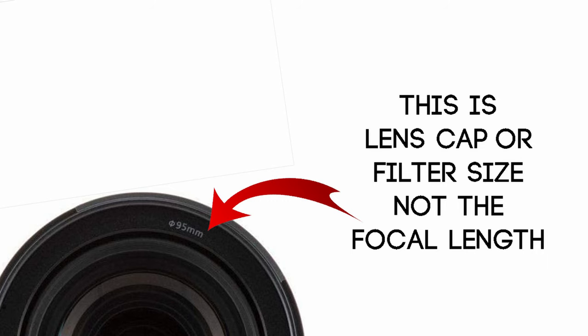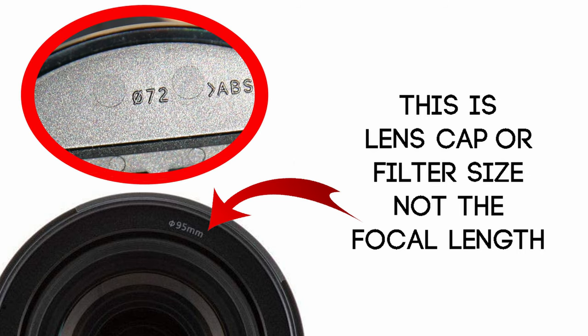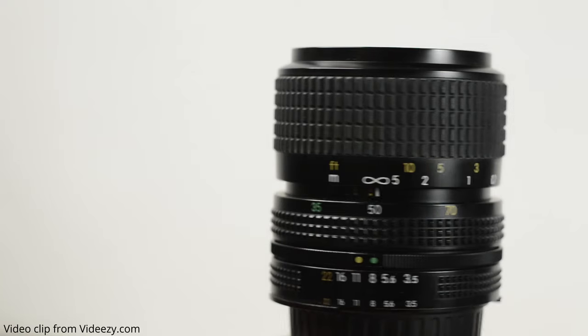Another element that might be confusing is the lens cap filter size, which is sometimes also listed in millimeters. Don't confuse it with your focal length that's part of the lens description. The lens cap and filter size will be listed either on the front of the lens or on the back of the lens cap. It's usually marked with a single number with MM, or just the number along with a circle and a slash through it.